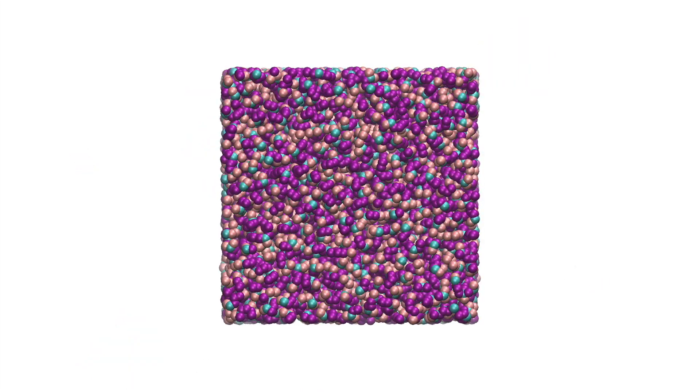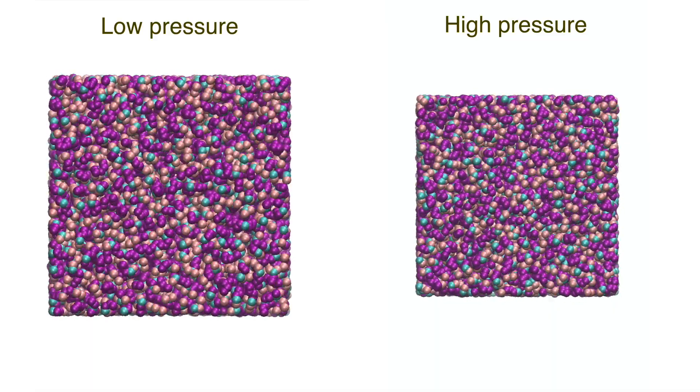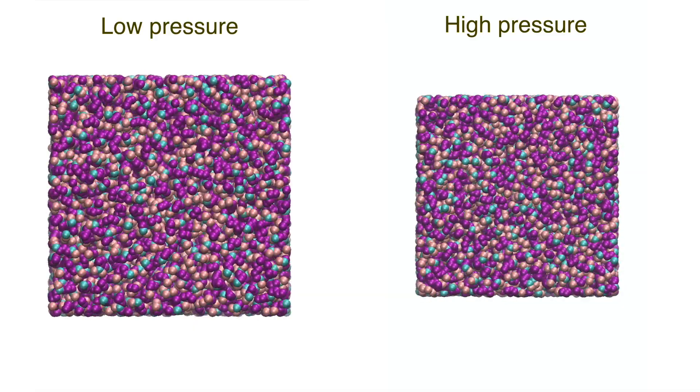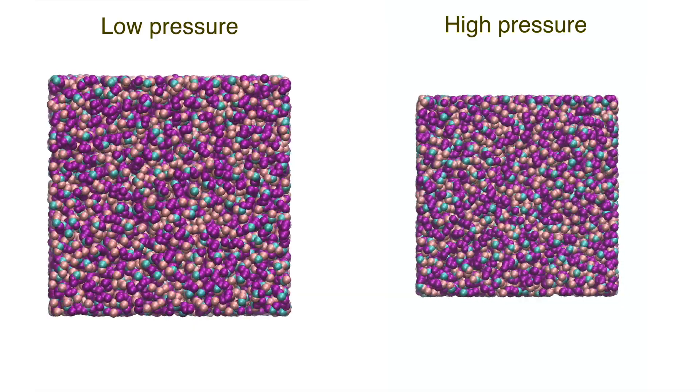Here you can see a movie from a molecular dynamics simulation of 500 squalene molecules. As we increase the pressure in the simulation, we can see that the squalene molecules are being packed together much more closely. At very high pressures, above one GPa, we can see that the squalene can no longer move around and it is stuck in one configuration, like a solid would be.